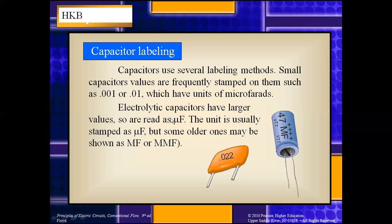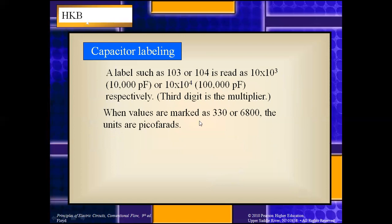Electrolytic capacitors have larger values and are read in microfarads; the unit is usually stamped as μF, but some older ones may show MF or MMF. Labels such as 103 or 104 are also sometimes found. The third digit acts as a multiplier: 103 means 10 × 10³ picofarad = 10,000 pF, and 104 means 10 × 10⁴ picofarad = 100,000 pF. Always remember the third digit is the multiplier factor.